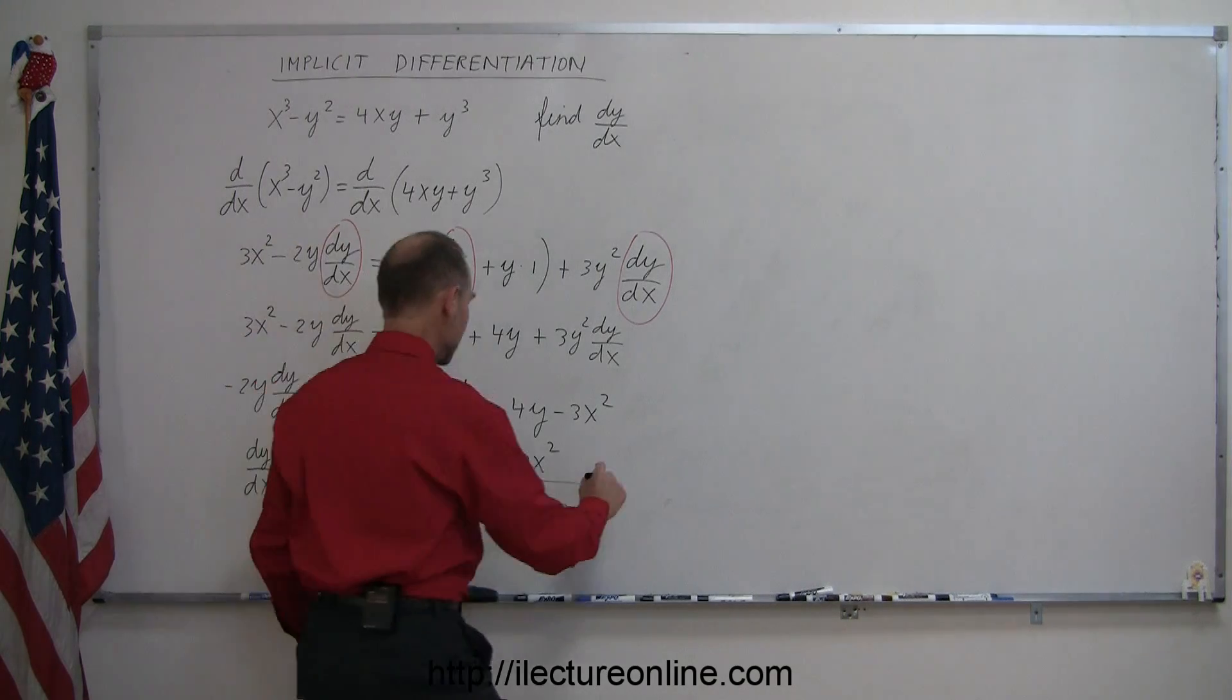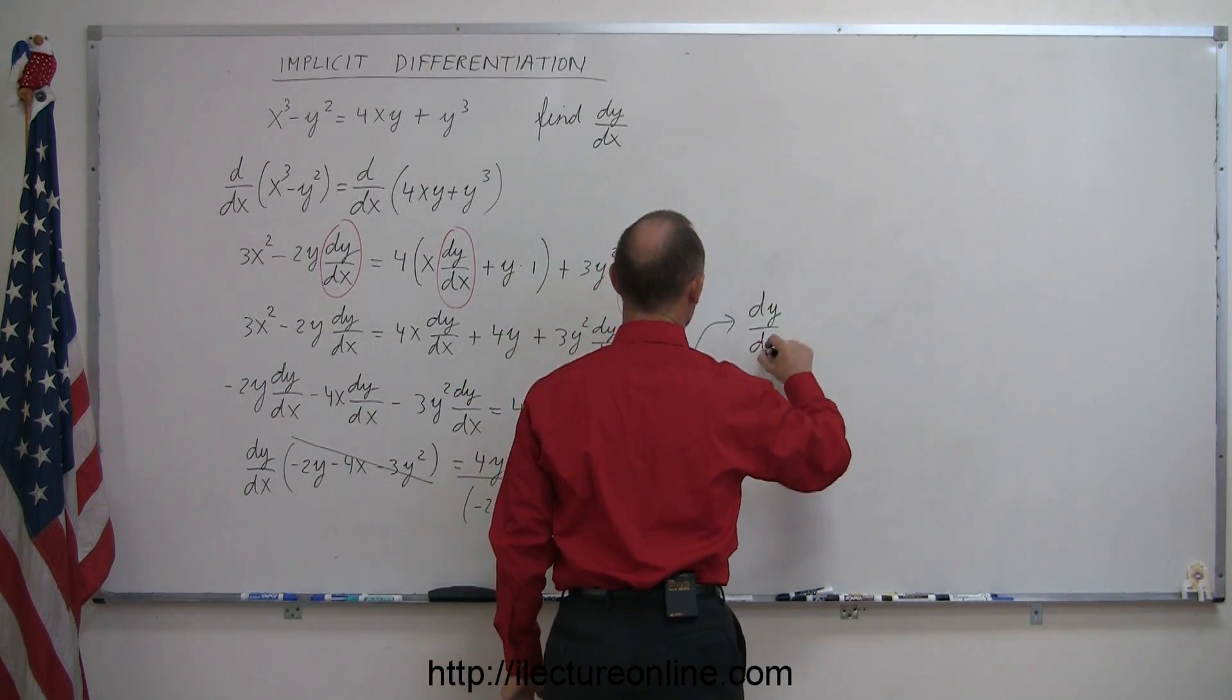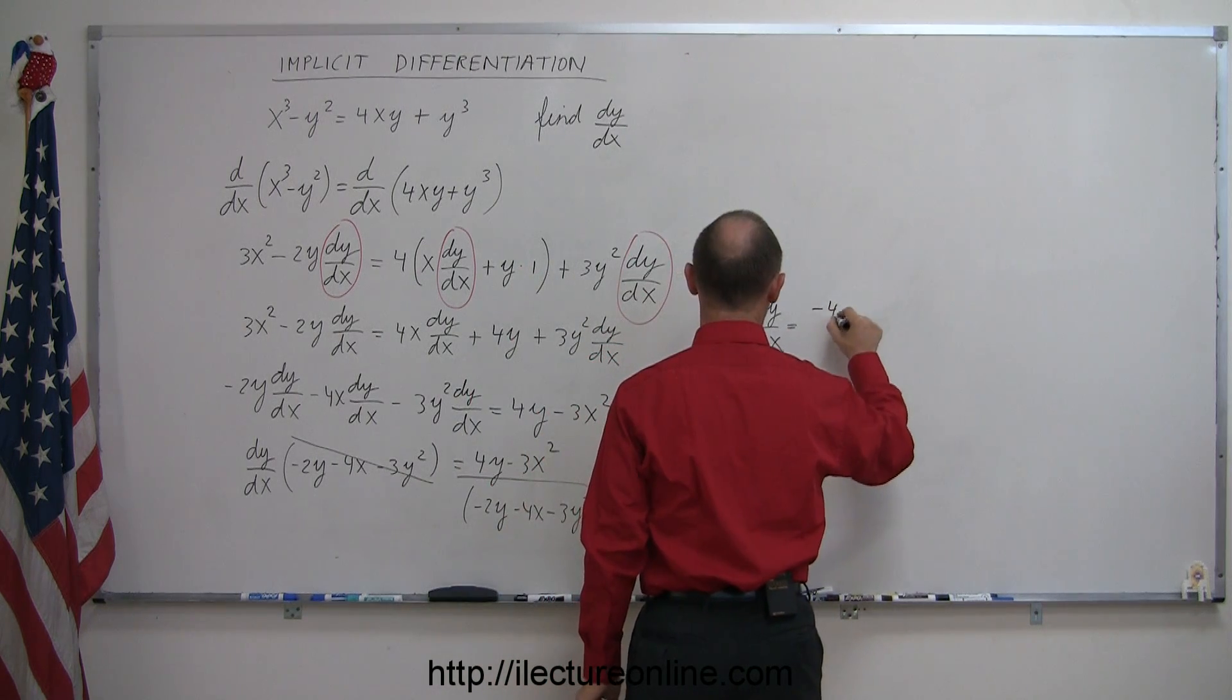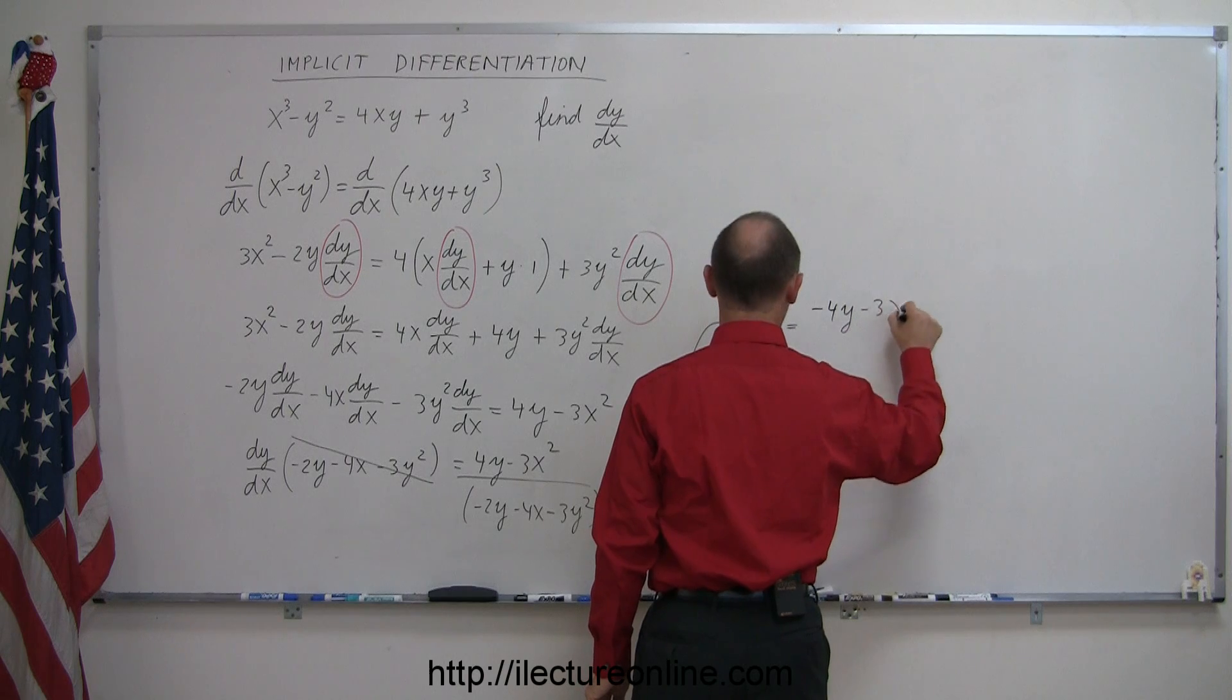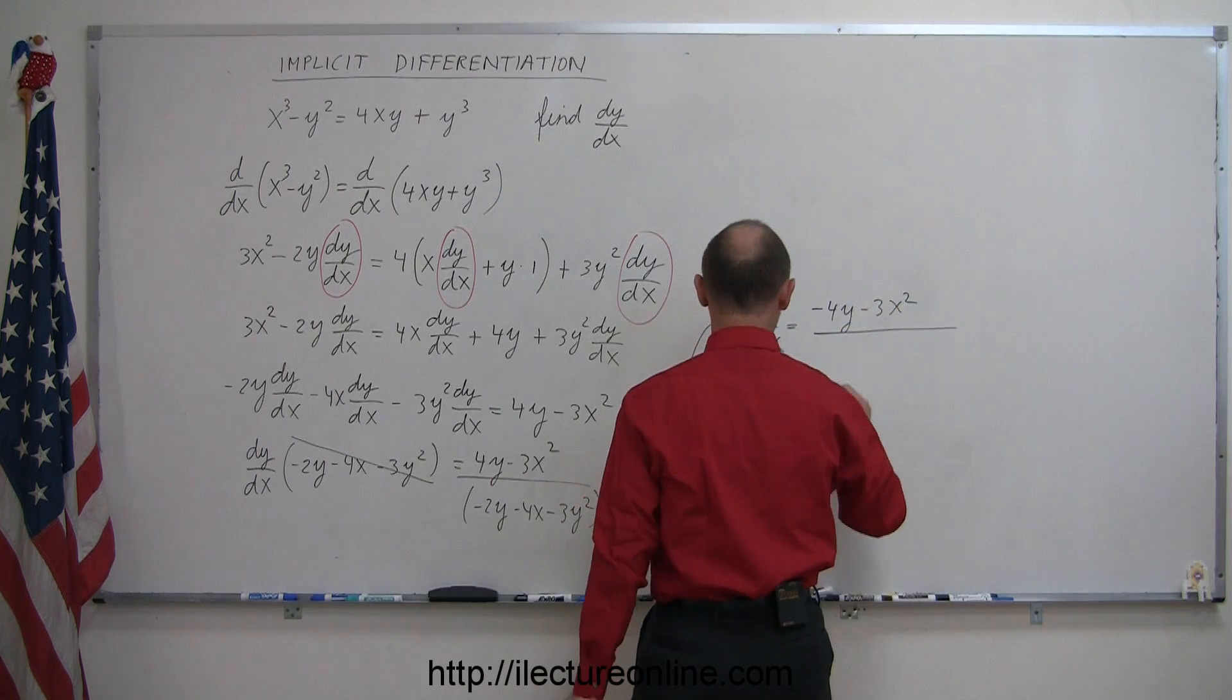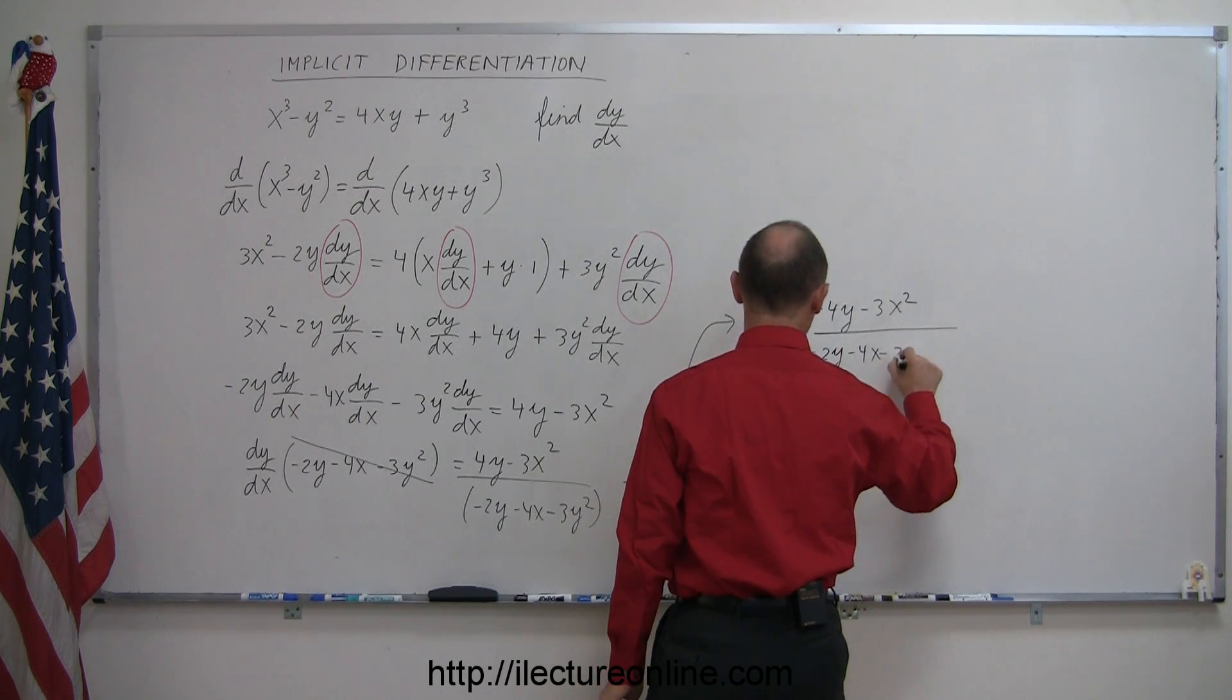And then I can say that the derivative of y with respect to x of that equation right there is equal to minus 4y minus 3x² divided by, and I don't think I can simplify anything here, we'll write it as minus 2y minus 4x minus 3y².